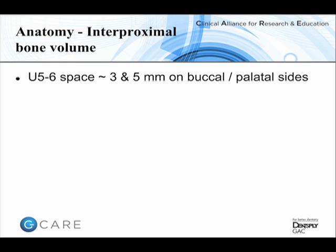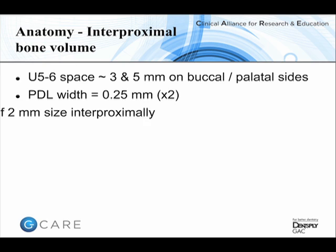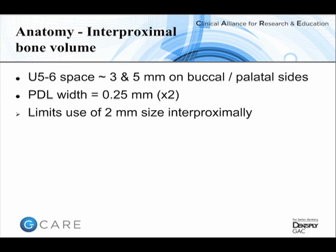On average, at the upper second bicuspid–first molar interproximal space — a fairly classical insertion site — the buccal side has about 3 mm of space between roots, while the palatal side has 5 mm because there is only a single palatal root on the molar. Allowing a quarter of a millimeter of distance for the periodontal ligament on both sides means we lose half a millimeter of space. Consequently, I don't use 2 mm diameter mini-implants in interproximal sites — only in edentulous and mid-palate areas.